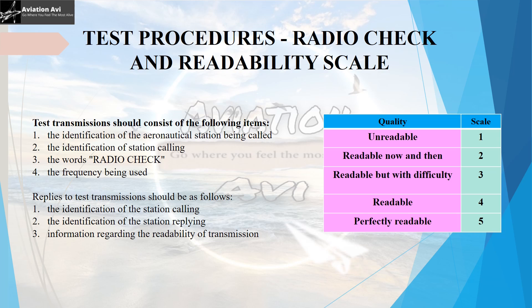Now that we have understood the standard phrases used on RT, let us understand the radio test procedures and the readability scale. In order to understand how clear a transmission is on the RT, the clarity or readability is divided on a scale of one to five.